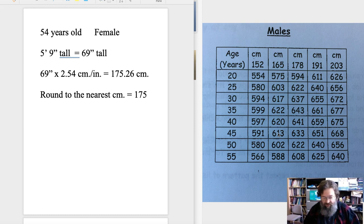In lab I went over how to do it using the chart for males with the same basic idea. Here we've got a 54 year old person who is female who is 5 feet 9 inches tall. Now 5 feet 9 inches is 69 inches.